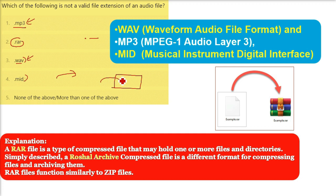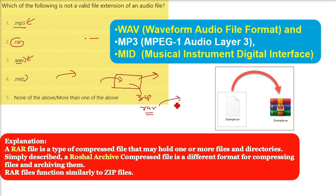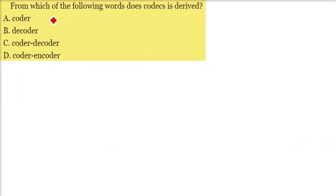Think of it like packing for travel — you don't take your whole house, just what's important, then unpack at the destination. That's zipping and unzipping. RAR (Roshal Archive) is a compressed file format for compressing and archiving files, functioning similarly to a ZIP file — it contains compressed files and directories that can be decompressed elsewhere.